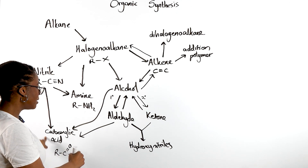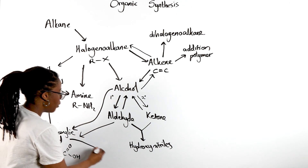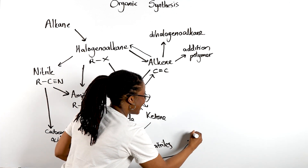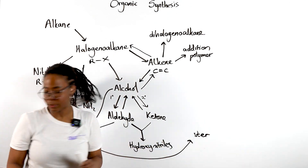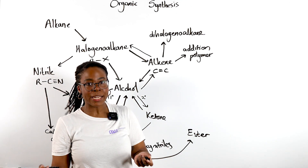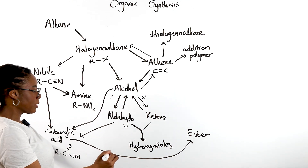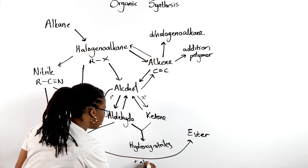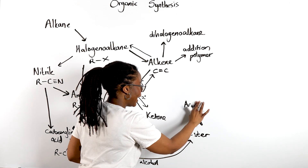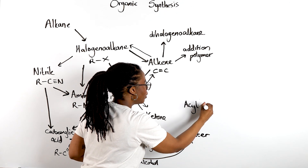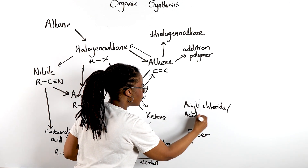If we come back to this carboxylic acid — carboxylic acids react with alcohols to give us esters. But that's not the only way we can produce an ester. We know that we can produce an ester much faster if instead of starting from a carboxylic acid with an alcohol, we instead use an acyl chloride or an acid anhydride.